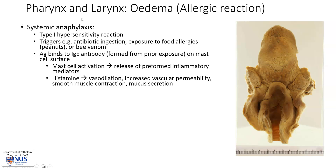Edema of the laryngeal and pharyngeal structures in this instance is due to an allergic reaction. It is seen in systemic anaphylaxis, which is a type 1 hypersensitivity reaction. Often the triggers would include antibiotic ingestion, for example penicillin, or exposure to food allergies such as peanuts, perhaps shellfish, and also bee venom. What happens is that the antigen binds to an IgE antibody, which is previously formed from prior exposure.